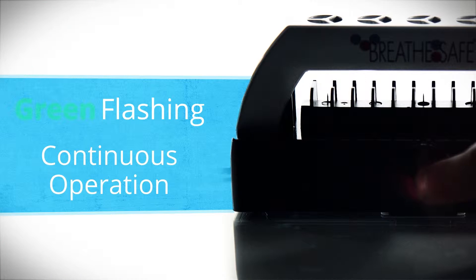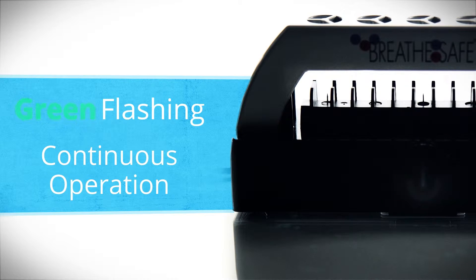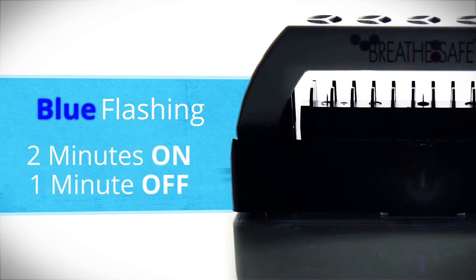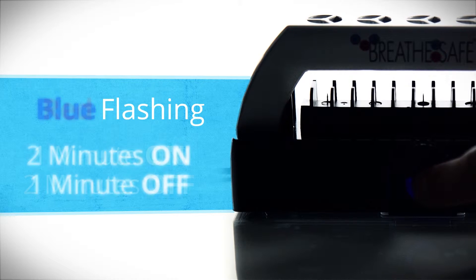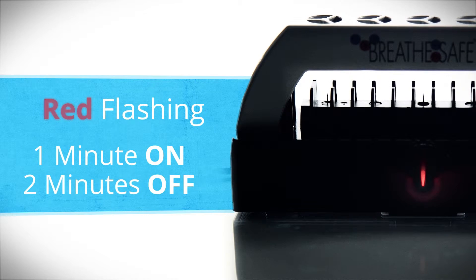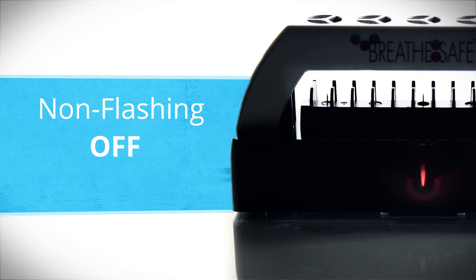Choose between three operating cycles by pressing and holding the power symbol. Green flashing light produces plasma continuously. Blue flashing light plasma cycles between two minutes on and one minute off. Red flashing light plasma cycles between one minute on and two minutes off. Any non-flashing light means the machine is off.